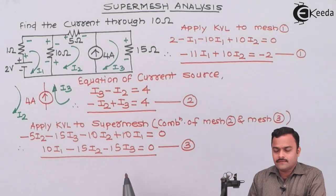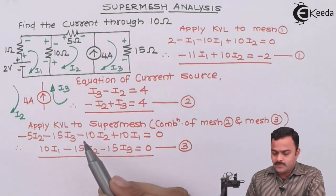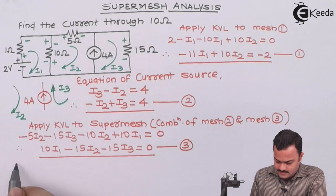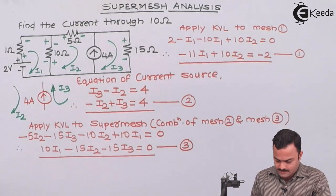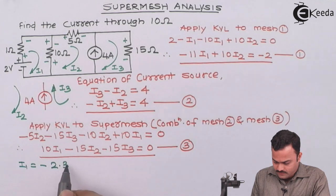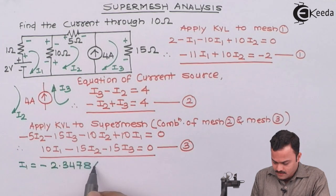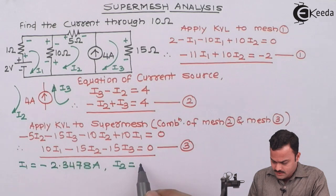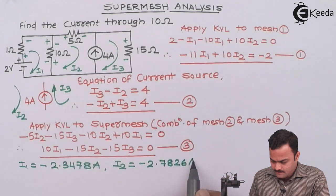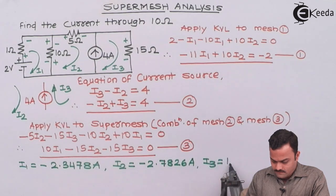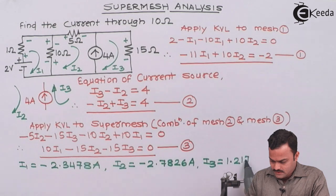Our requirement was having 3 equations because we are having 3 currents. So after solving equation 1, 2 and 3, we will get a current I1 as minus 2.3478 ampere, then I2 as minus 2.7826 ampere, and I3 as 1.2174 ampere.